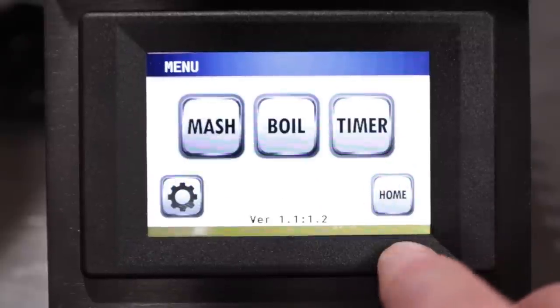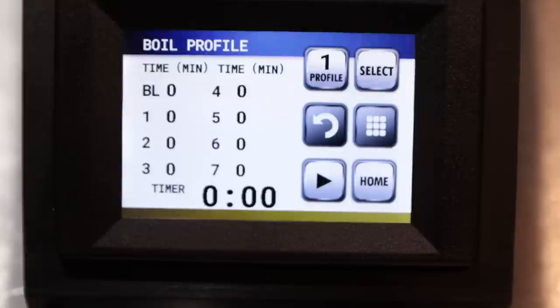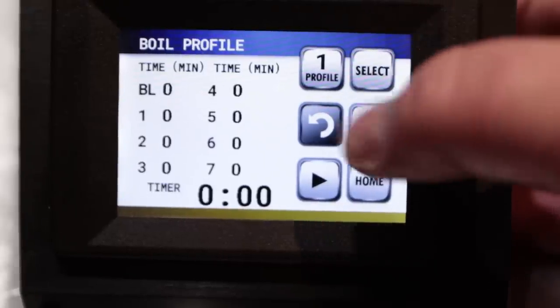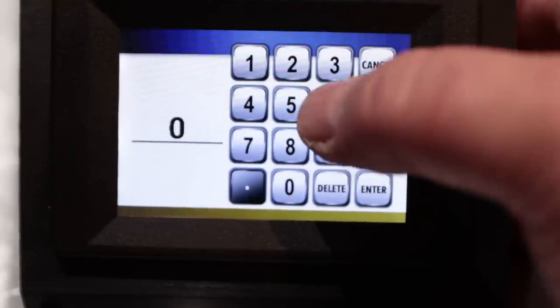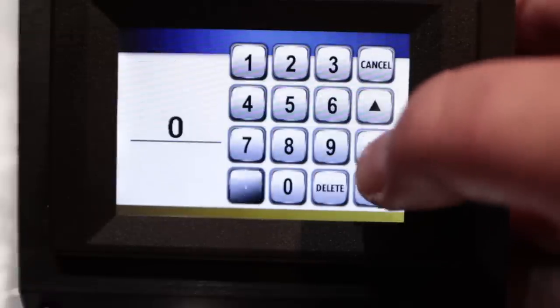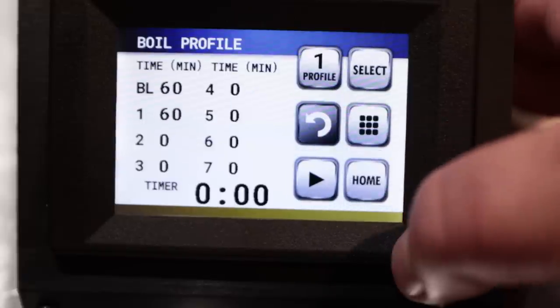Going back to the menu screen, the boil. On your boil timer, you're going to select the BL which is the boil length. So if you're doing a 60 minute boil, you'll put that in. If your first addition is at 60 minutes, you're going to put 60 minutes there. Then if your other addition, let's say that's at 15 minutes, put 15 minutes in there. And then let's say the next one's five minutes and so on.